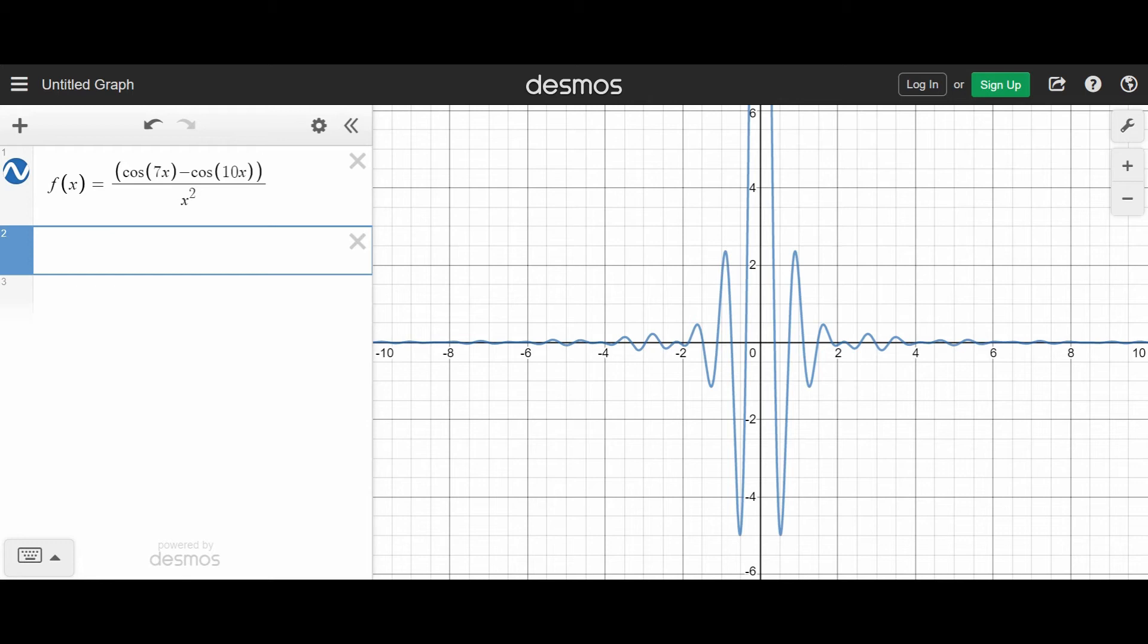you could simply type in the x value that you want. So if you want to evaluate the function at x equals 0.4, for example, then all you would do is you would take the value 0.4 and you would plug it in for x into the function. And so I can literally just retype all that stuff in. So I can say cosine of 7 times 0.4 and then I can subtract cosine of 10 times 0.4, and I can divide all of that by 0.4 squared, and I'll get the answer negative 1.8036 or negative 1.804.